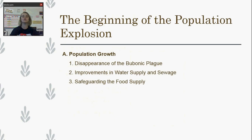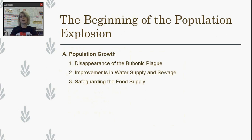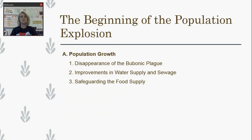During this period we're also going to see a really great expansion in population growth. The bubonic plague had been on and off since the Middle Ages, but around the 18th century it basically disappears. Now that that major disease is gone — and of course there are other diseases — it's going to allow the population to continue to grow. There is also an improvement in the water supply and sewage, resulting in fewer water-based diseases like cholera. Because there is more clean water available, it allows people to live longer.